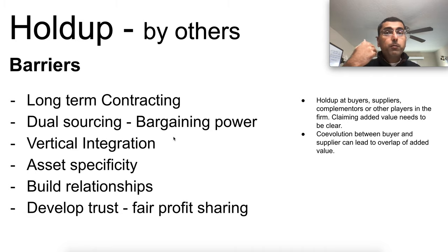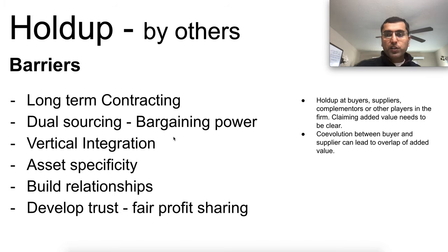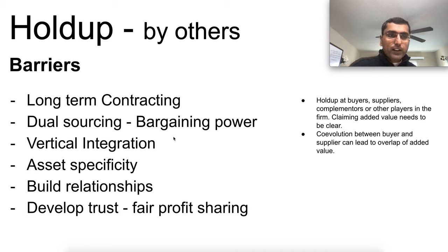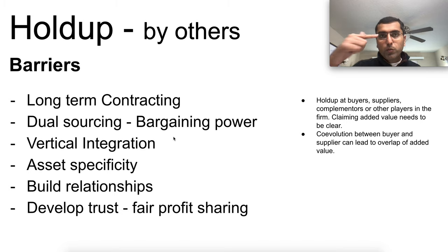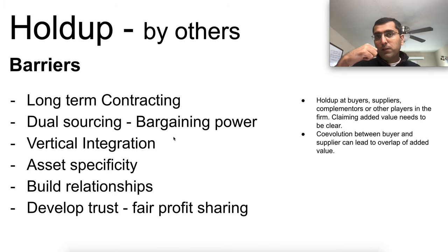How do you improve your position even if you're performing well, but your downstream partners are not raising their game? Understanding that strategically and working with your partners is very important so they don't hold up or eat into your claimed value. Barriers to hold-up include long-term contracting — short-term contracts don't give contractors incentive to invest and build for you. Dual sourcing gives you bargaining power — if you have only one supplier, they have enormous leverage over you.